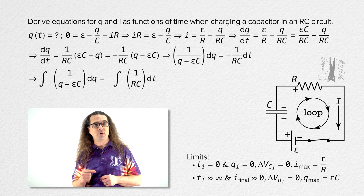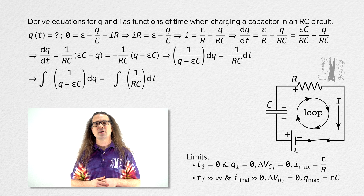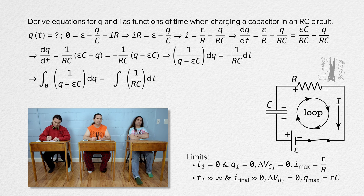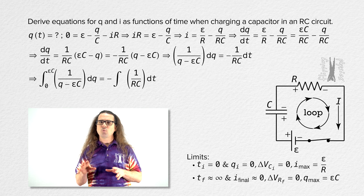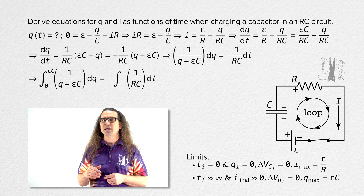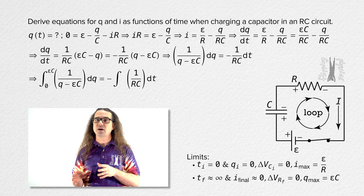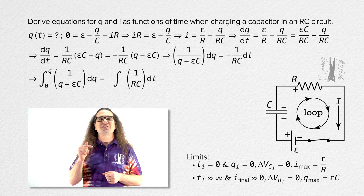Then we take the integral of the whole equation. On the left-hand side, we are integrating with respect to charge, so our limits are in terms of charge. The initial charge on the capacitor is zero, so the lower limit is zero. The final limit is the charge at some time t after we close the switch — that is, lowercase q, which represents the charge at time t.